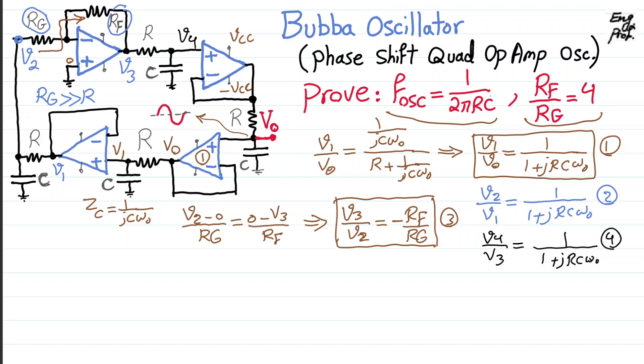So okay, almost there. V4 appears at the input of a buffer. Again, we're assuming that op-amps are properly biased. So it's a buffer stage, V4 shows up at the output. And V4 now is at the input of another RC low-pass filter in which V_out is the output. And therefore, because of that, I can write again the same thing. V_out over V4 is 1 over 1 plus jRCω naught. And that's equation number five.